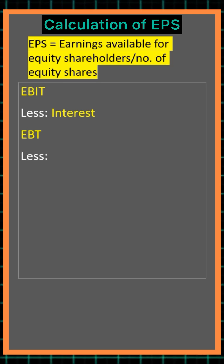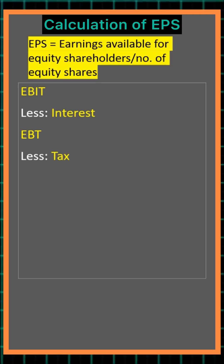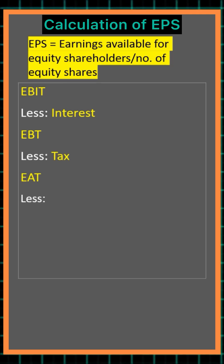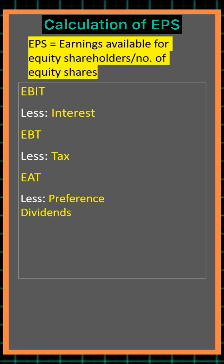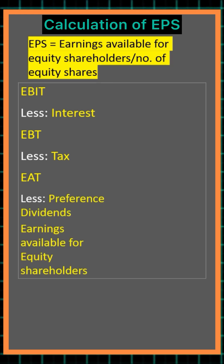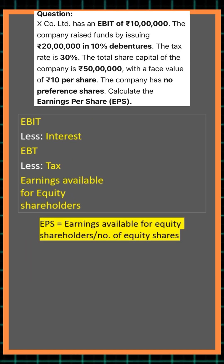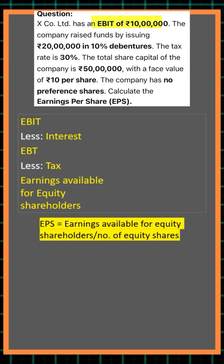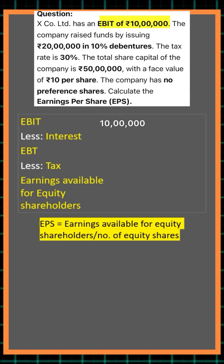Then deduct tax to get earnings after tax, and then deduct preference dividends, if any, to arrive at earnings available for equity shareholders. Let's apply this to a question: earnings before interest and tax is rupees 10 lakh. Deduct interest on rupees 20 lakh at 10 percent.